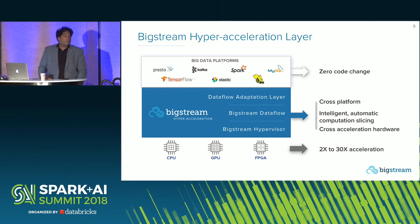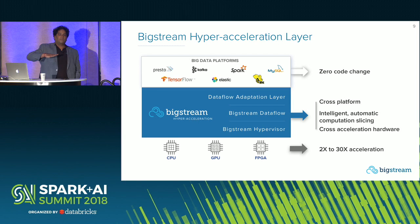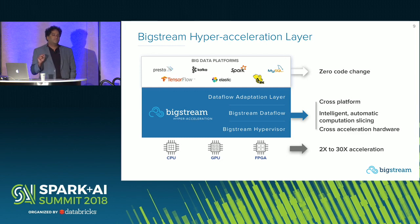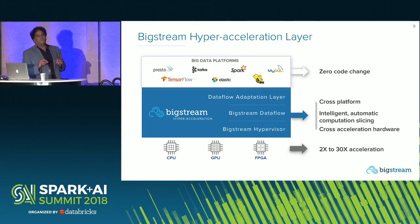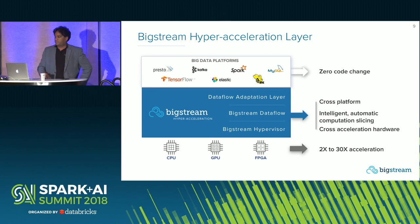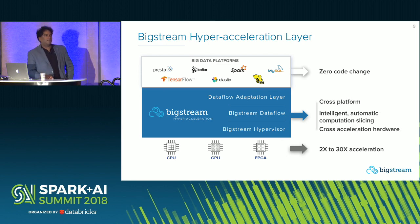What we've come up with is the BigStream hyperacceleration layer, which automates the process of acceleration. The key intuition is that all of those big data platforms, at the end of the day, produce what I call a data flow — your data and a set of transformations to that data, including concurrency information, result production and consumption. It's a DAG — a directed acyclic graph. All big data platforms produce one; they look different from platform to platform, but they all express the parallel computation this way.